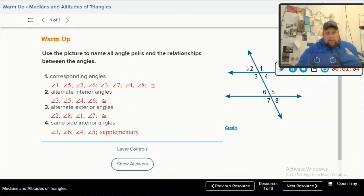Then alternate exterior, like one and seven, two and eight are also congruent. Last but not least is same side interior, so like three, six, four, five. Guess what? Those are supplementary. They add to 180, which makes sense because if two is the same as six, two and three are a linear pair, they'd add to 180, so would three and six.